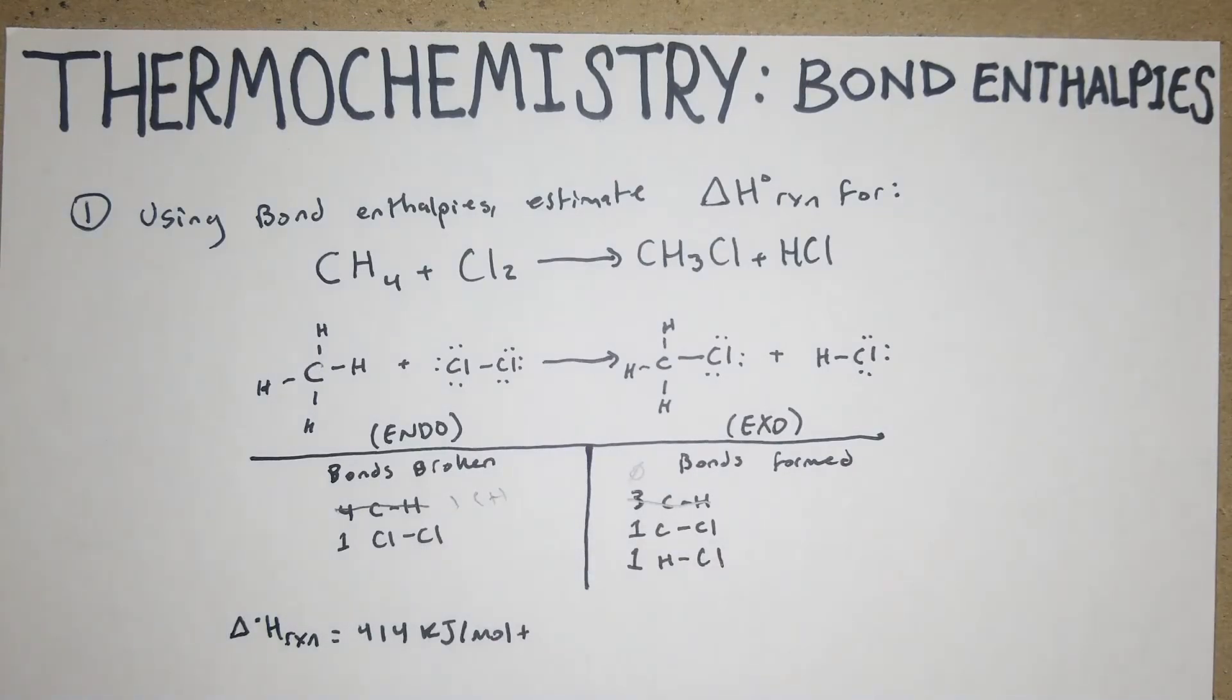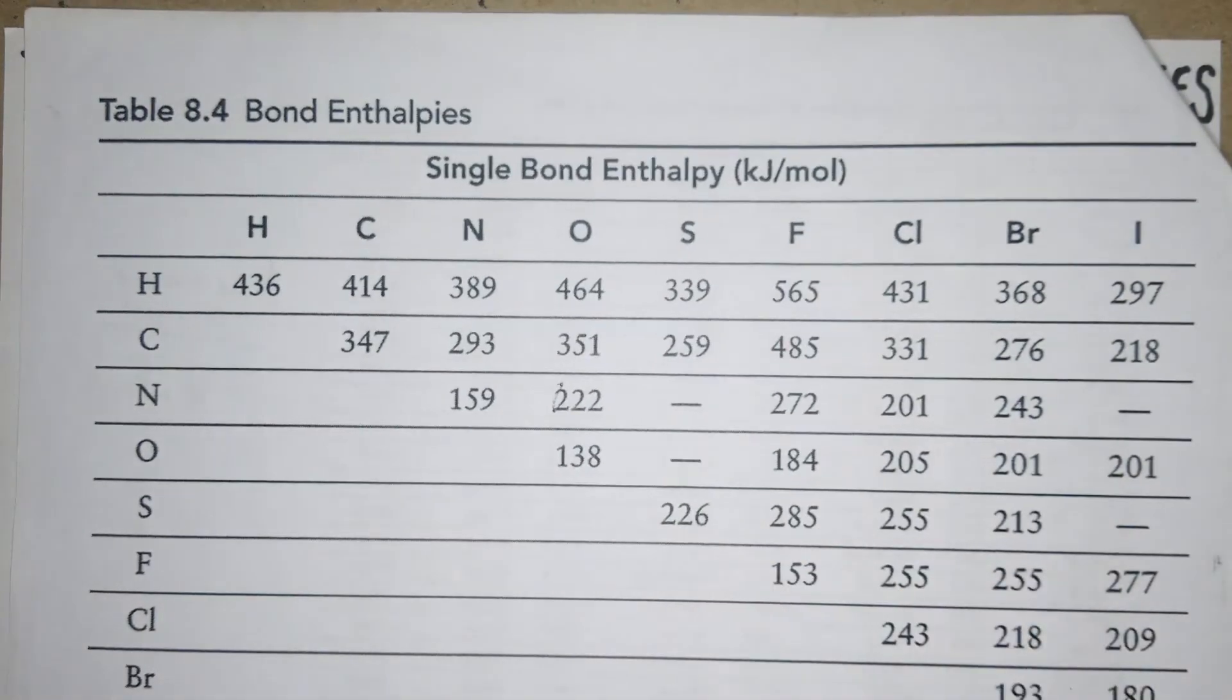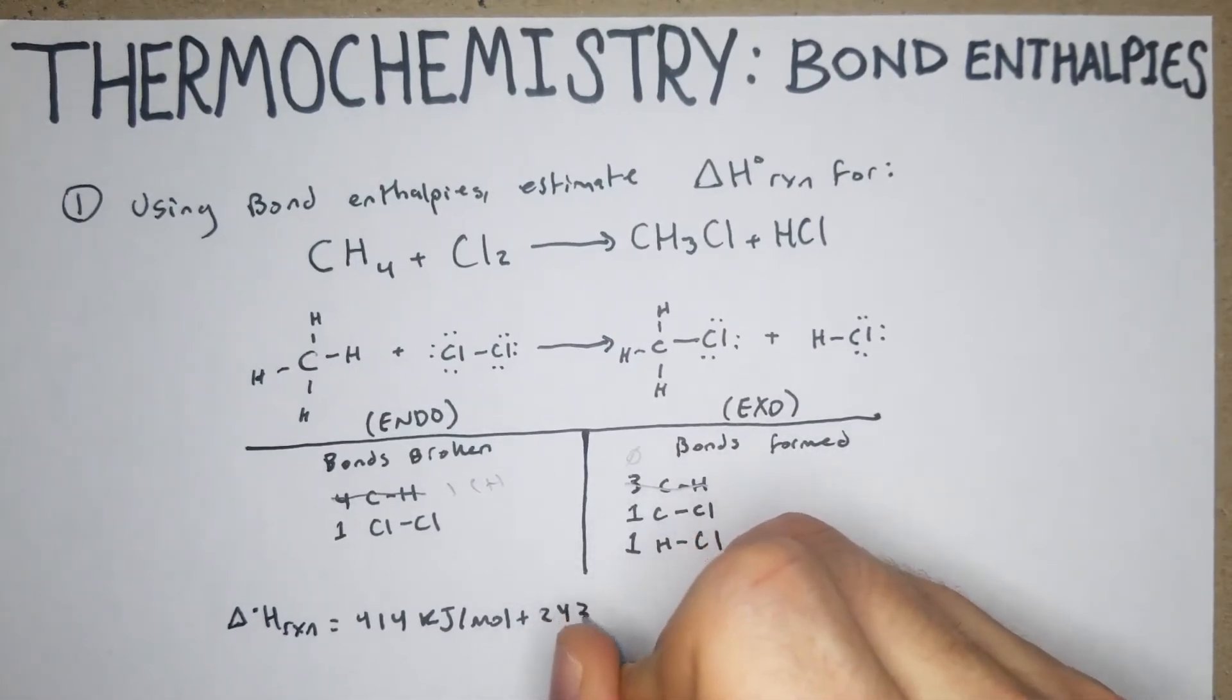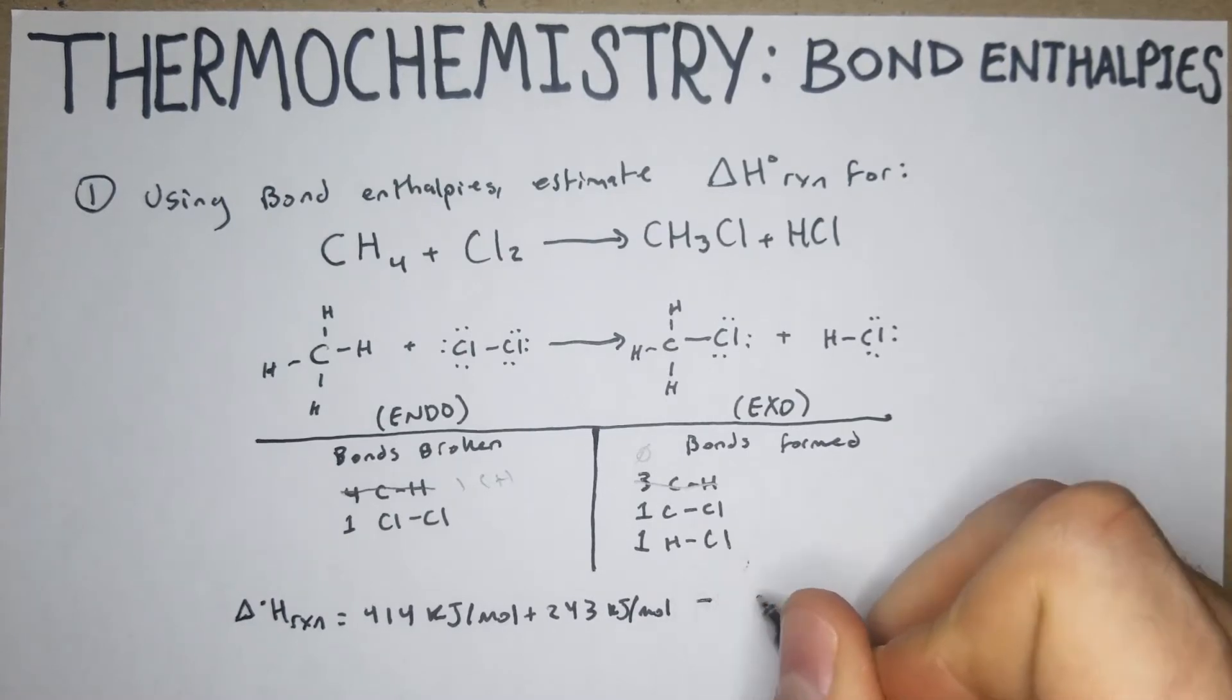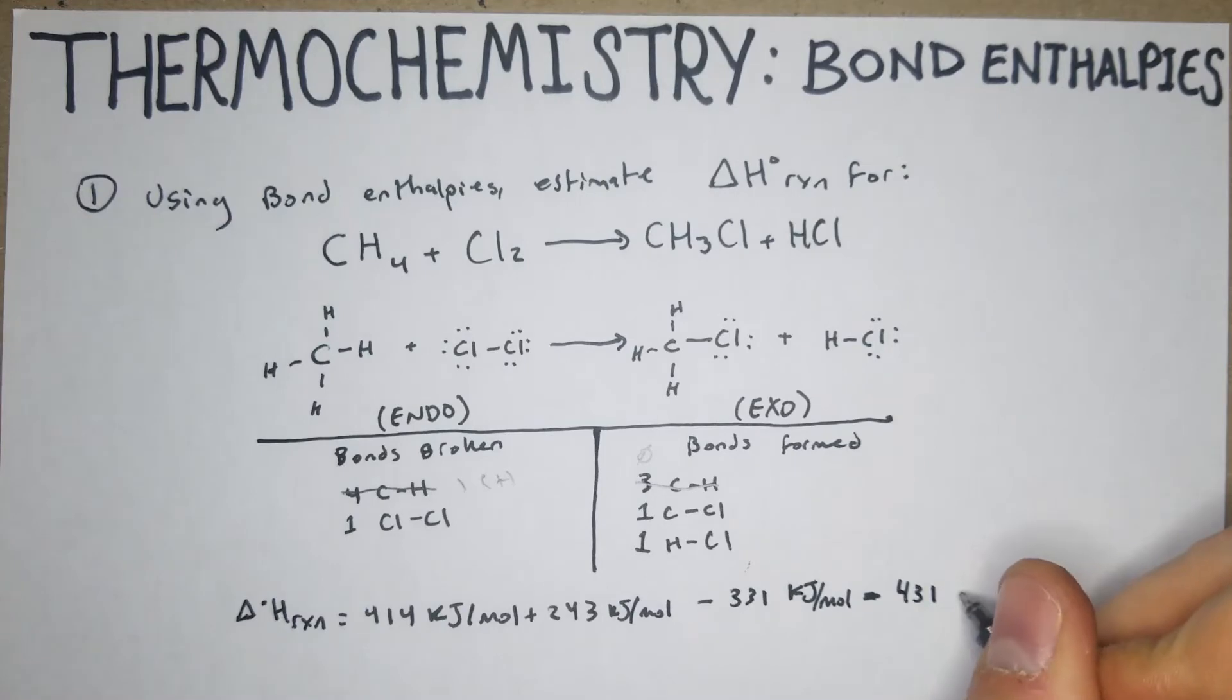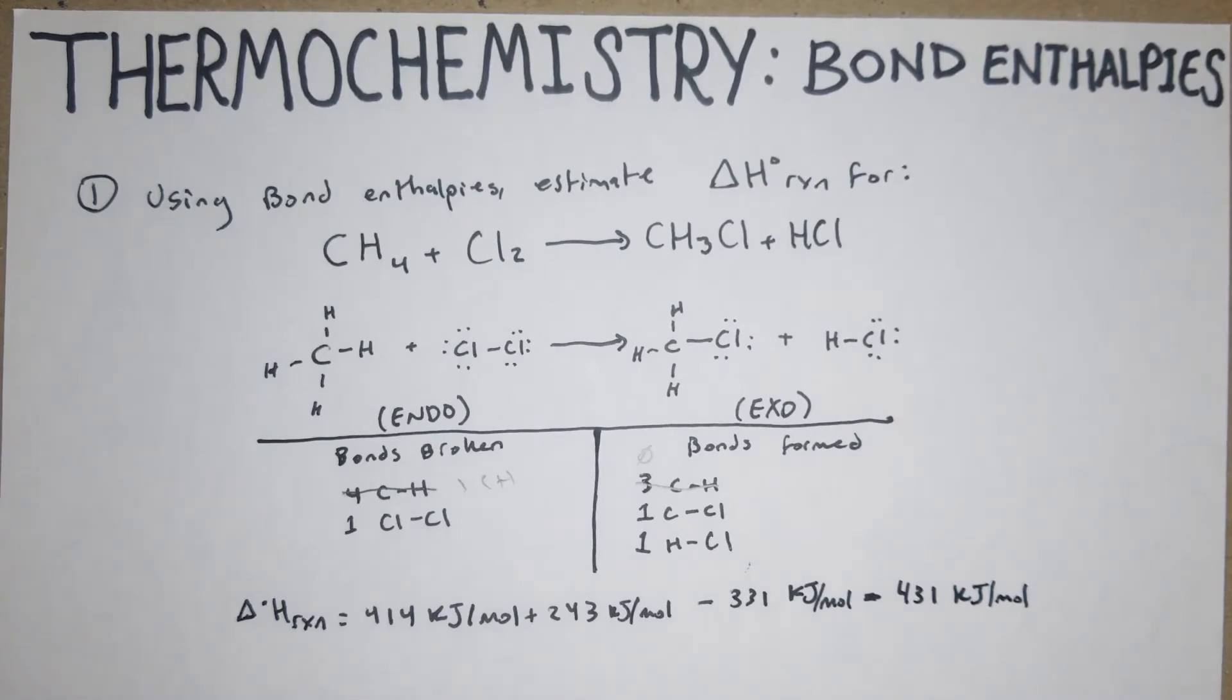We canceled it out so we're just doing the one. That's going to be plus the one Cl-Cl, so we have minus everything on this side. The C-Cl bond is 331 kJ per mole, minus 431 kJ per mole which is our H-Cl. Again, it's not exactly like the enthalpies of formation where you sum everything.